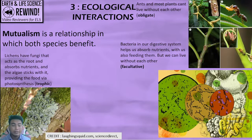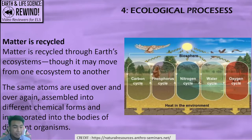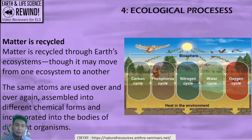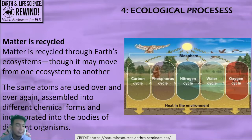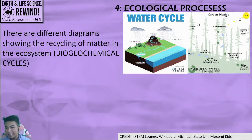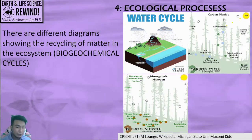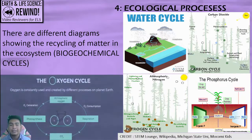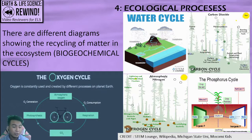When it comes to ecological processes, matter is always recycled in ecosystems. Though it may move from one ecosystem to another, it never goes away from the biosphere. The same atoms are used over and over again in different chemical forms and incorporated into organisms. These diagrams show the recycling of matter: the water cycle, carbon cycle, nitrogen cycle, phosphorus cycle, and the oxygen cycle are examples of ecological processes that cycle materials and matter.